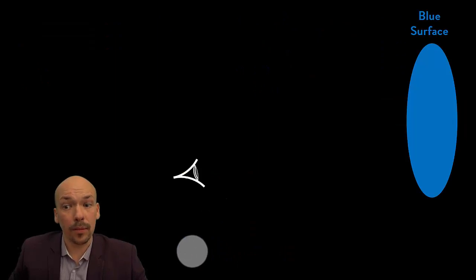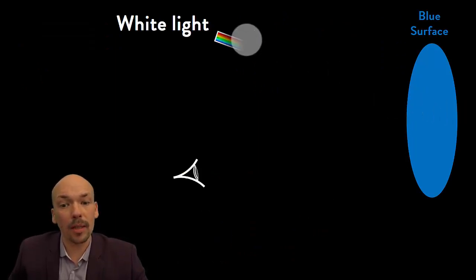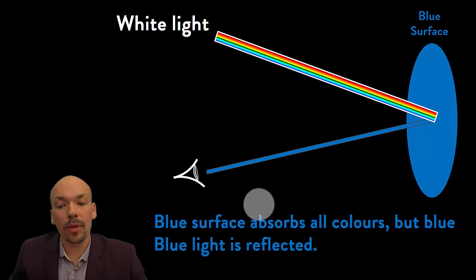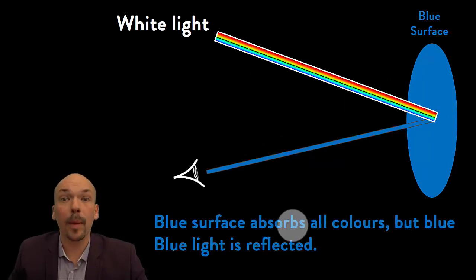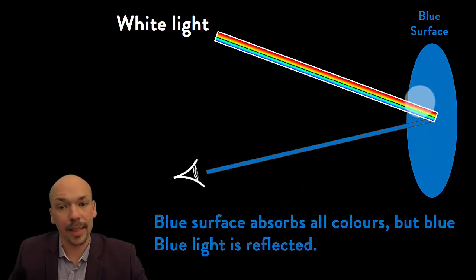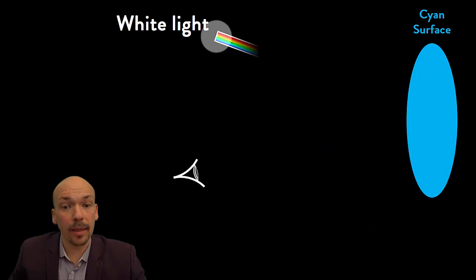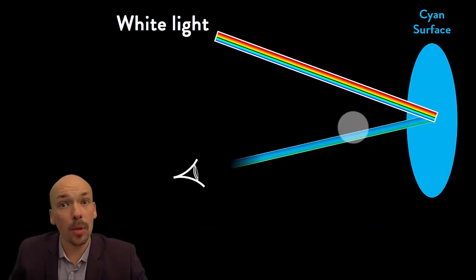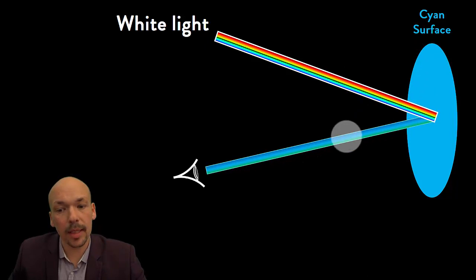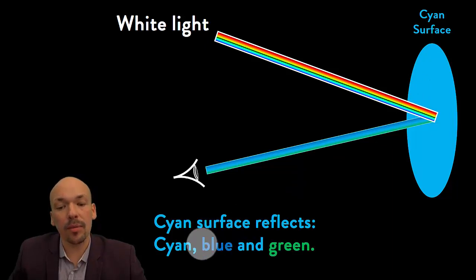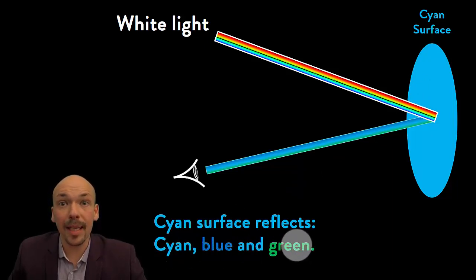How does it work when you look at surfaces? We have a blue surface here, and we have white light containing all the colors. Then the blue surface only reflects blue — the blue surface absorbs all colors but blue. Blue light is reflected, and that's why you can see it as blue. When we have a cyan surface and we have white light, then all colors hit the cyan surface, and multiple colors are reflected. Not only cyan is reflected, but also blue and green, as they are the two primary colors of cyan. So a cyan surface reflects its own color but also blue and green, as they are the primary colors of that cyan.